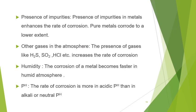Next factor: presence of impurities — impure state of metal. Presence of impurities in metals enhances the rate of corrosion. If some impurities are present in the metal, that metal undergoes corrosion easily, whereas pure metal does not undergo corrosion easily. Impure metals corrode to a higher extent; pure metals corrode to a lower extent.